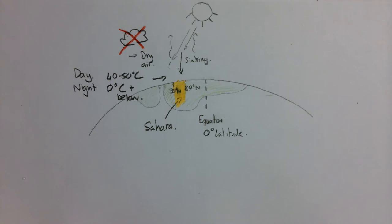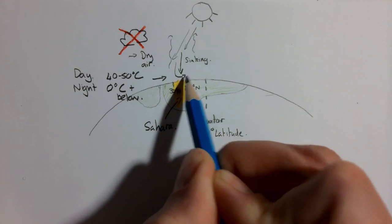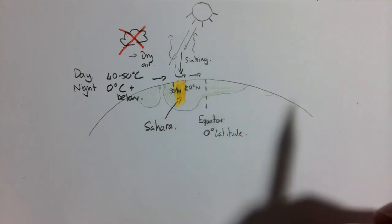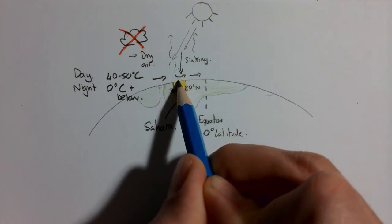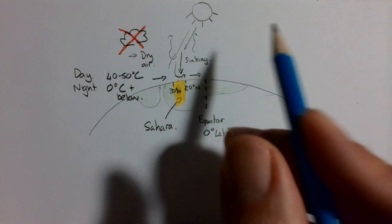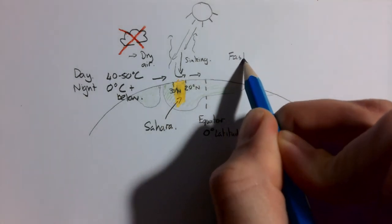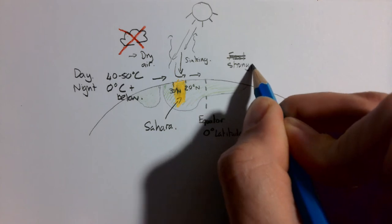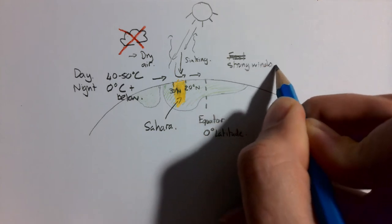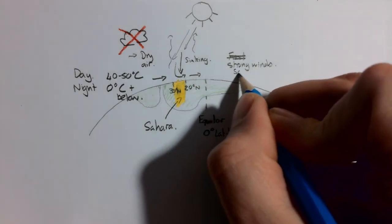One last thing I want to share with you is that this air that is sinking will then travel over ground back towards the equator. And this air moving from the hot deserts to the equator will create fast winds. So these deserts are often places of strong winds that can lead to sand storms.